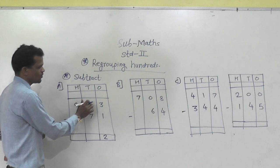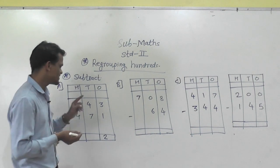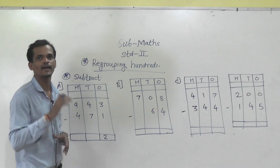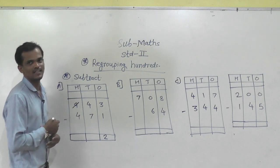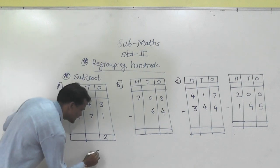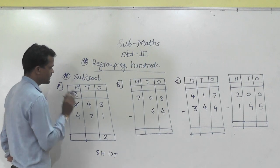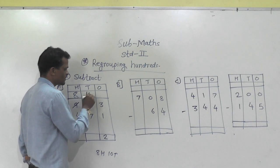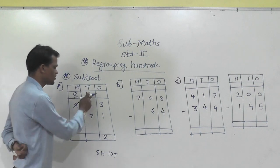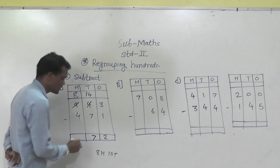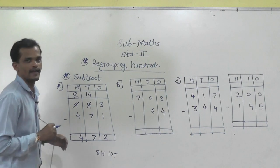Then 4 minus 7 is not possible because 7 is greater than 4 — we cannot subtract a greater number from a smaller number. So we have to regroup this 9 hundreds into 8 hundreds and 10 tens. Write 8 here, and 10 tens add into this 4 tens, so you will get 14 tens. Now 14 minus 7 is 7, and 8 minus 4 is 4. So 472 is the answer.